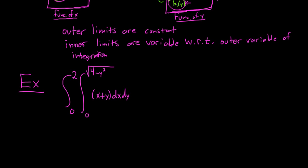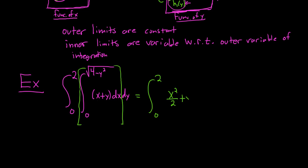Step one: we first integrate the inner integral. We're integrating with respect to x, so x plus y integrates to x squared over 2 plus yx. I'll put a bracket there as a visual aid — you don't have to, but it provides clarity. These are x values, so we're going from x equals 0 to x equals the square root of 4 minus y squared.